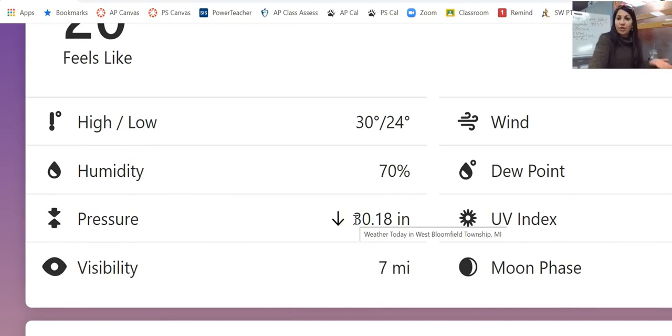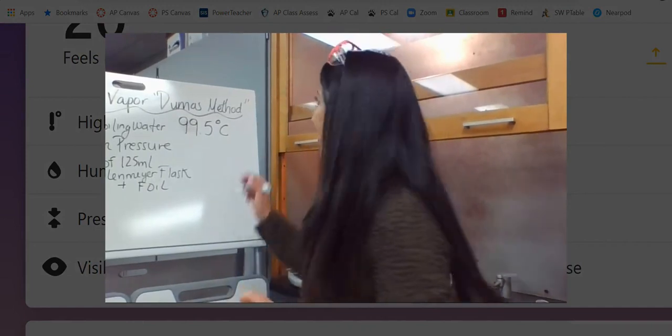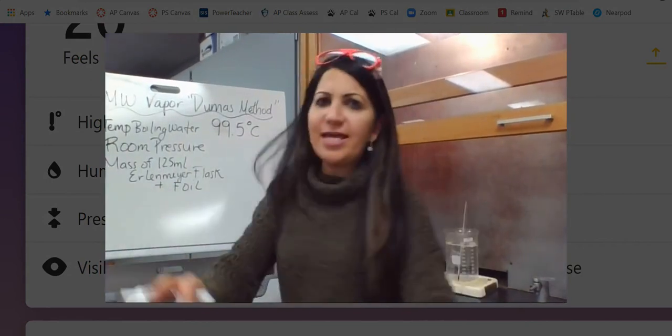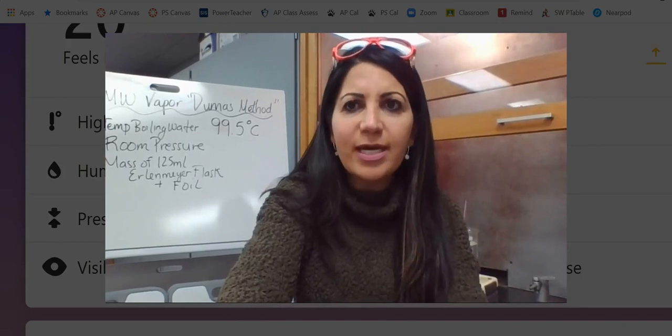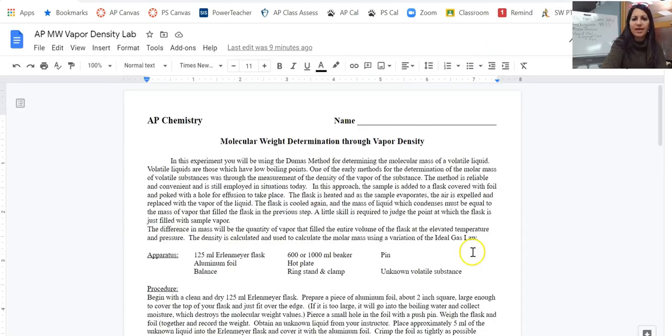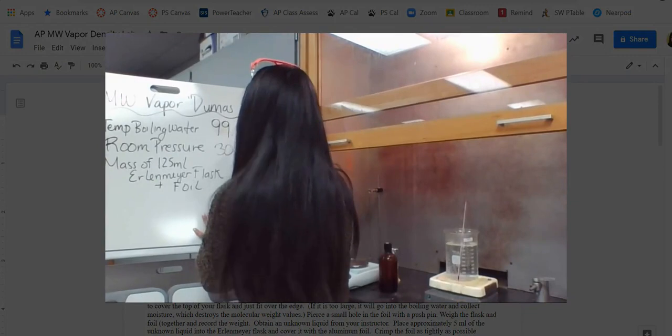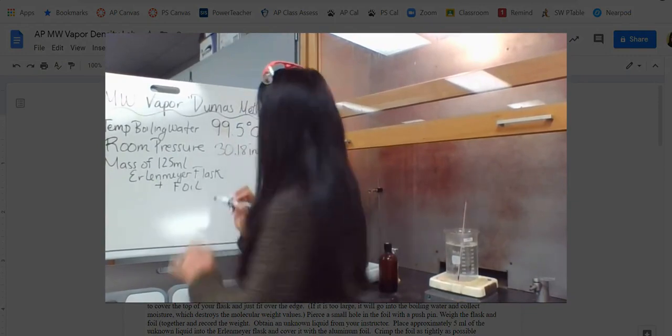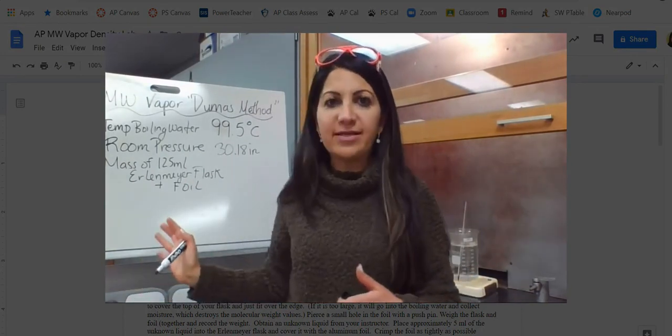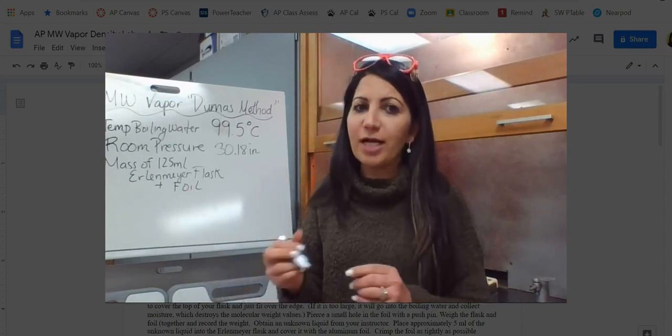And it looks like we've got a pressure of 30.18 inches. Now, it could be different, so you're going to want to make sure that you get the value for that particular day, for that day, in order to do your calculations. But I'm going to go ahead and I'm going to write down here. I've got the temperature of my boiling water. So let's enlarge this here. Temperature of the boiling water I have is 99.5 degrees Celsius. And then I have the room pressure. We said 30 point, let me just double check it real quick. It looks like it is 30.18 inches. So let's get that down as well. So don't forget, you're going to need to do a conversion for that and show your conversion. So in your data table, you're going to organize your data table. You want to make sure that your data table doesn't have calculated data. So it's supposed to be raw data.